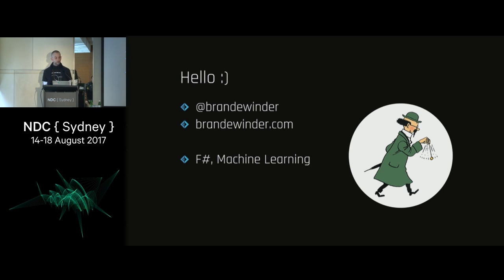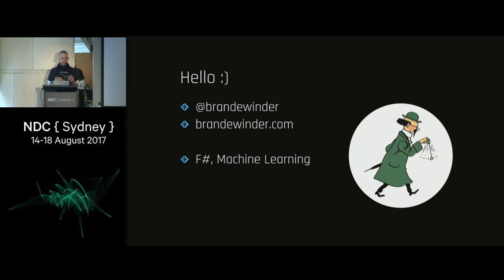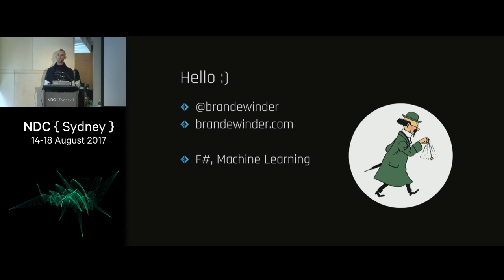My name is Matthias Brandewinder. You can find me on Twitter as this little creature here — this is also how I look on GitHub. I'm not a software engineer by training; my background is really in applied math and economics. At some point I moved from France to California. People who moved to California used to write code, so I started writing code. I started working with C#, and a couple of years back somebody told me every year you should learn a new language. It was 2010, I looked at F#, completely fell in love with the language. Most of what I do now is either F# or machine learning — typically both at the same time, hence the talk.